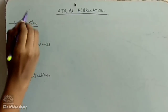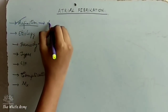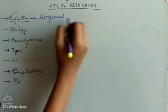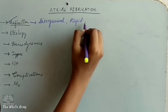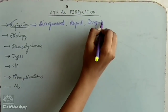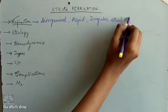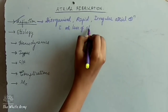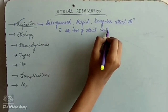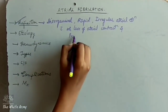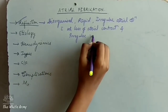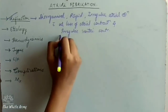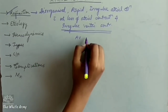Firstly, how will you define atrial fibrillation? It is defined as disorganized and rapid — the atrial impulses are disorganized, rapid but irregular atrial stimulation. In spite of this irregular atrial stimulation, it is associated with loss of atrial contraction and irregular ventricular contraction, which is determined by AV nodal conduction.